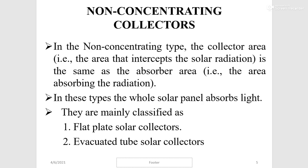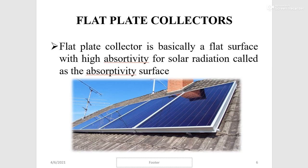In non-concentrating collectors, the collector area — that is, the area that intercepts the solar radiation — is the same as the absorber area. The whole solar panel absorbs light. They are mainly classified as flat plate solar collectors and evacuated tube solar collectors.